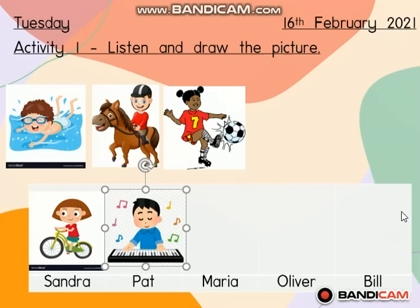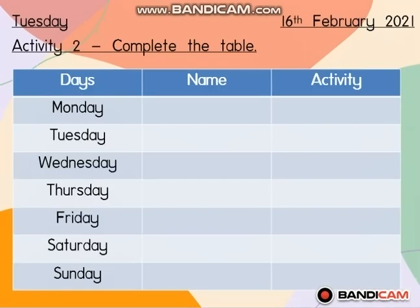Now let's move to the second activity. For the second activity, the instruction is to complete the table. I will play the audio again — you have to listen carefully and fill in the table. Let's try. Children's book, page 59, Activity 1: Listen and stick.